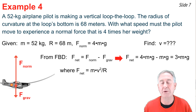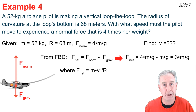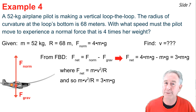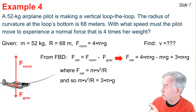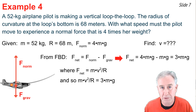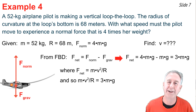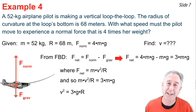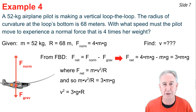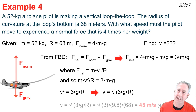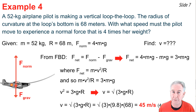Since F_net = mv² / r and F_net = 3mg, I set mv² / r = 3mg. Dividing both sides by m cancels the mass, then multiplying both sides by r gives v² = 3gr. Taking the square root of both sides: v = √(3gr). Substituting g = 9.8 and r = 68, I take the square root of 3 × 9.8 × 68 and get v = 45 m/s.